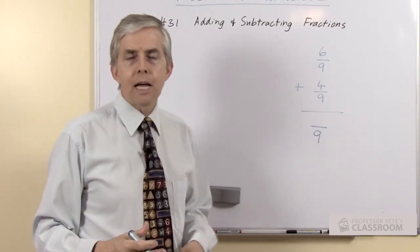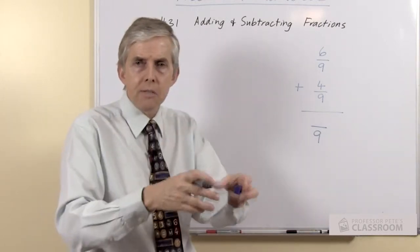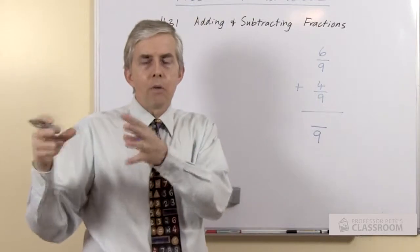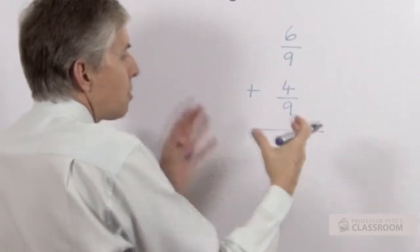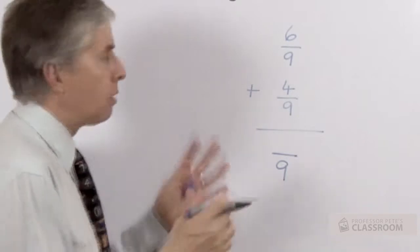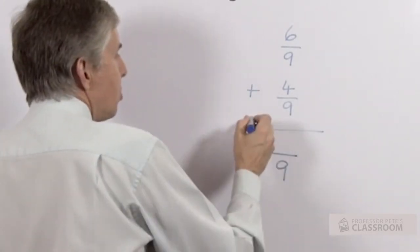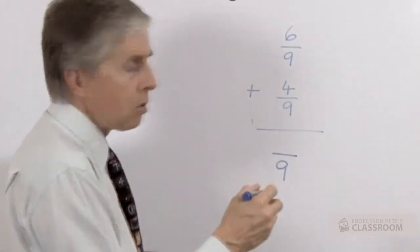A bit like we do with adding whole numbers, do we have enough of these to make ten so we can make one in the next column? In this case we're saying do we have enough to make nine to make a whole? Of course we do.